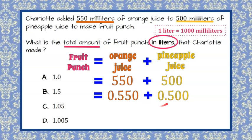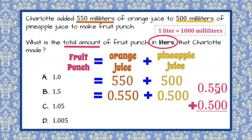Now we need to add these together, since they're both in liters. We line up our decimal point: 0 plus 0 is 0, 5 plus 0 is 5, 5 plus 5 is 10 — so write 0 and carry the 1. Bring down your decimal point, and 1 plus 0 plus 0 is 1.